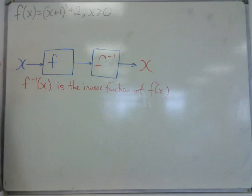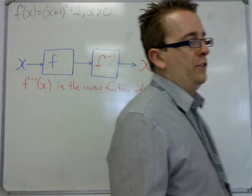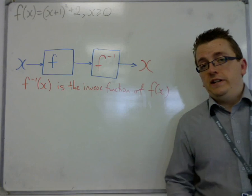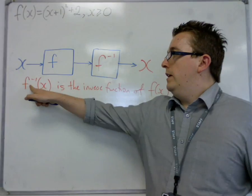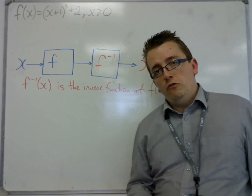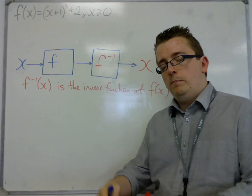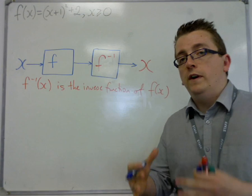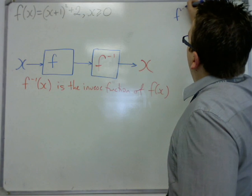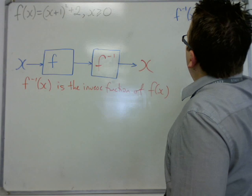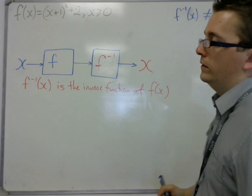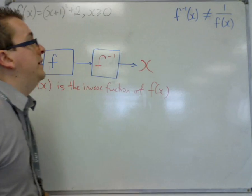Now it's very common that students will get this confused because we use notation to the minus 1 here to represent an inverse function. We currently know if we put something to the power of minus 1, that means 1 over it's a reciprocal. So it must be made clear that f to the minus 1 of x is not the same as 1 over f of x. That is not the case.